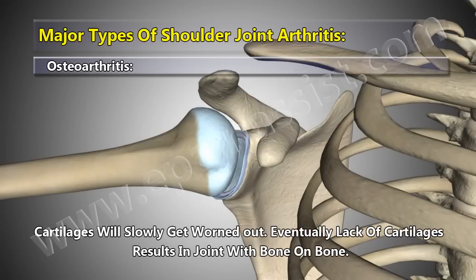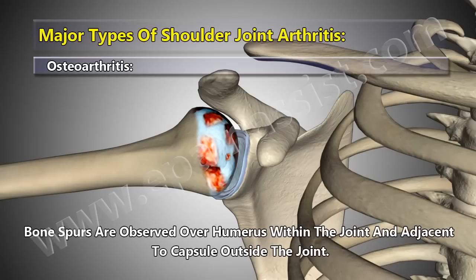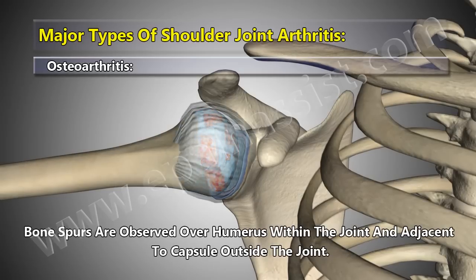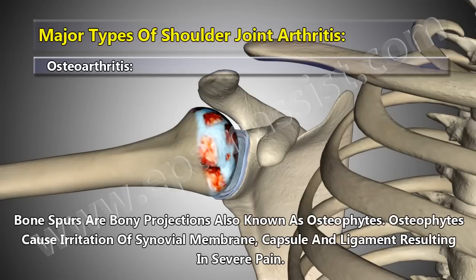Cartilages will slowly get worn out. Eventually, lack of cartilages results in a joint with bone on bone. Bone spurs are observed over the humerus within the joint and adjacent to the capsule outside the joint. Bone spurs are bony projections, also known as osteophytes.